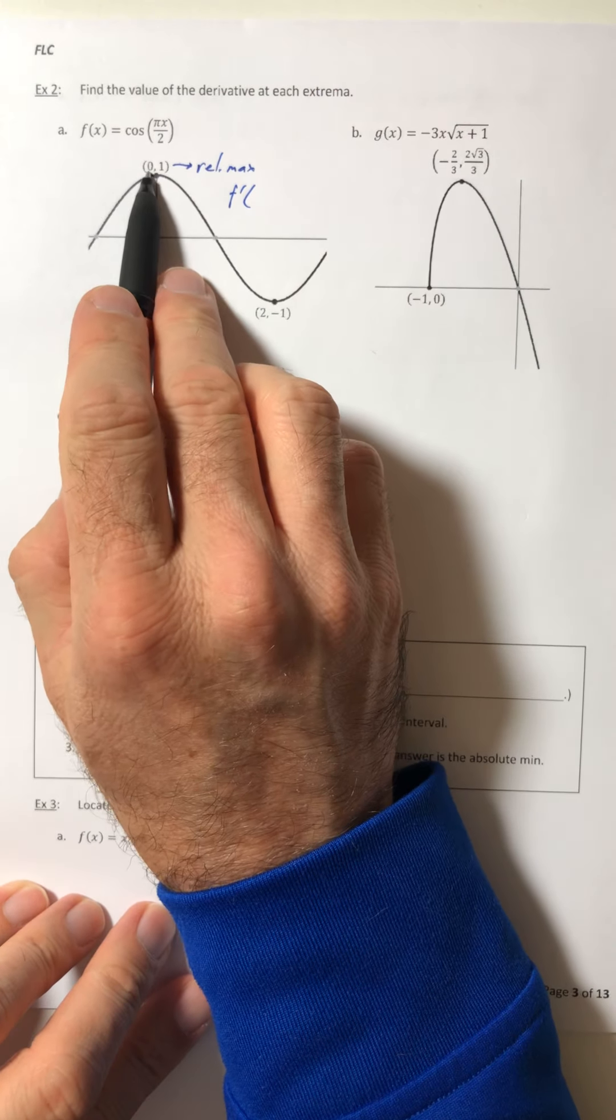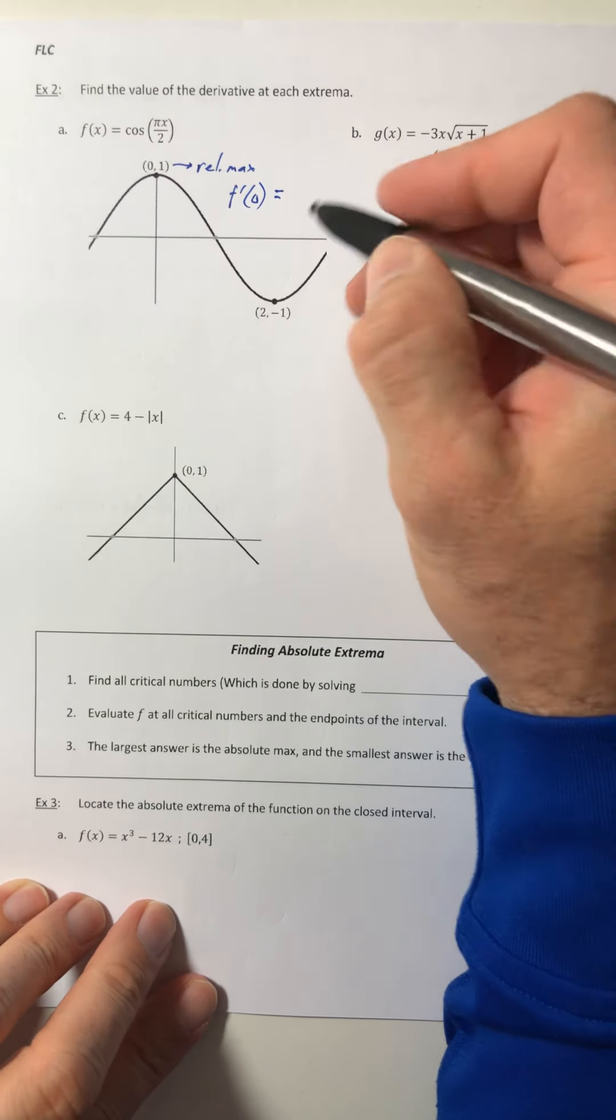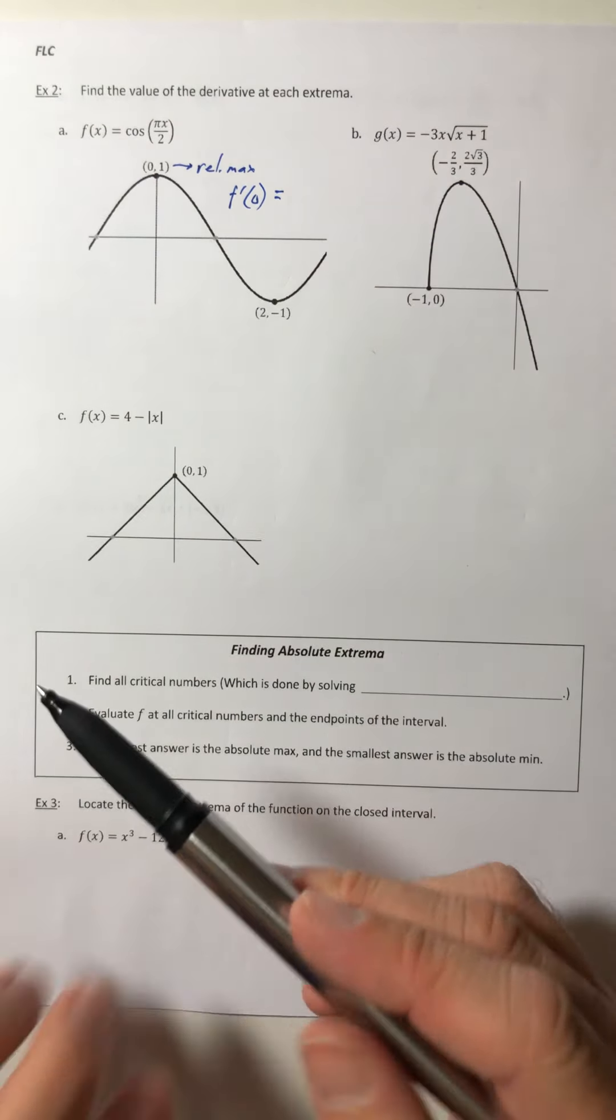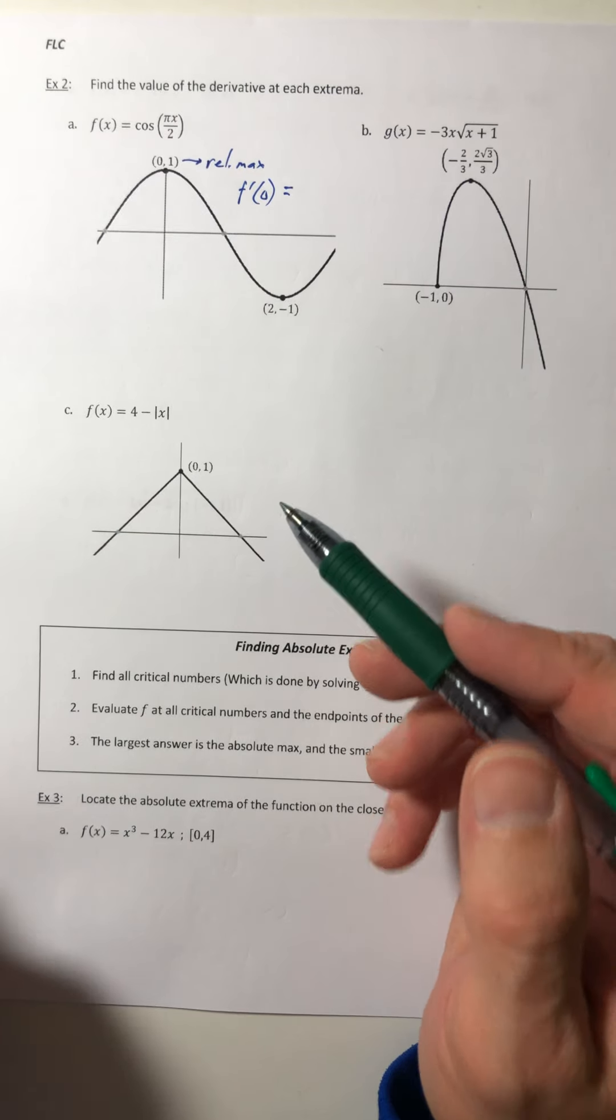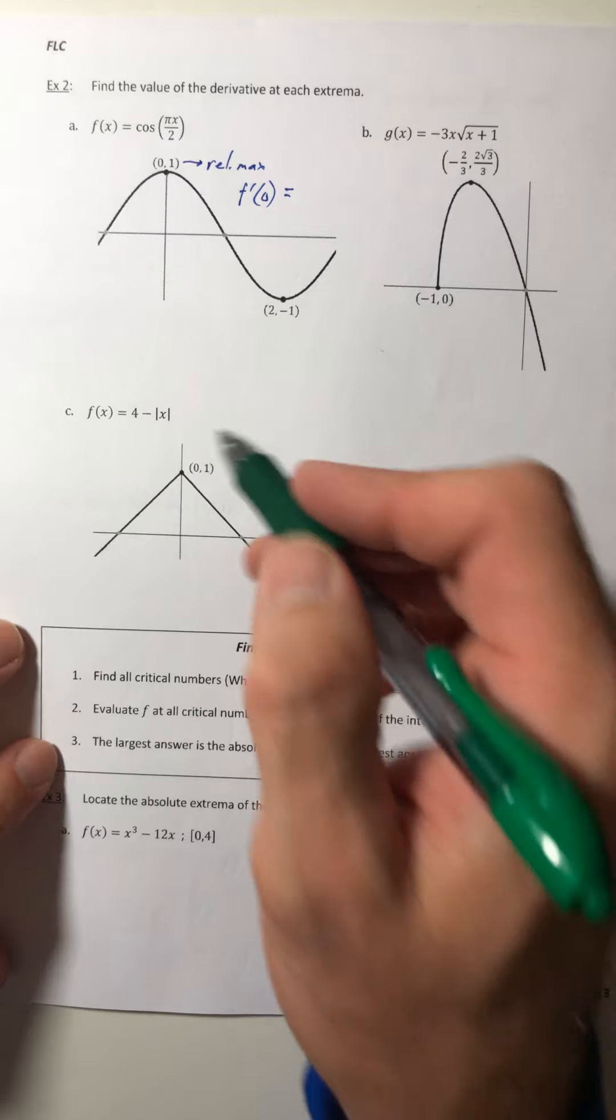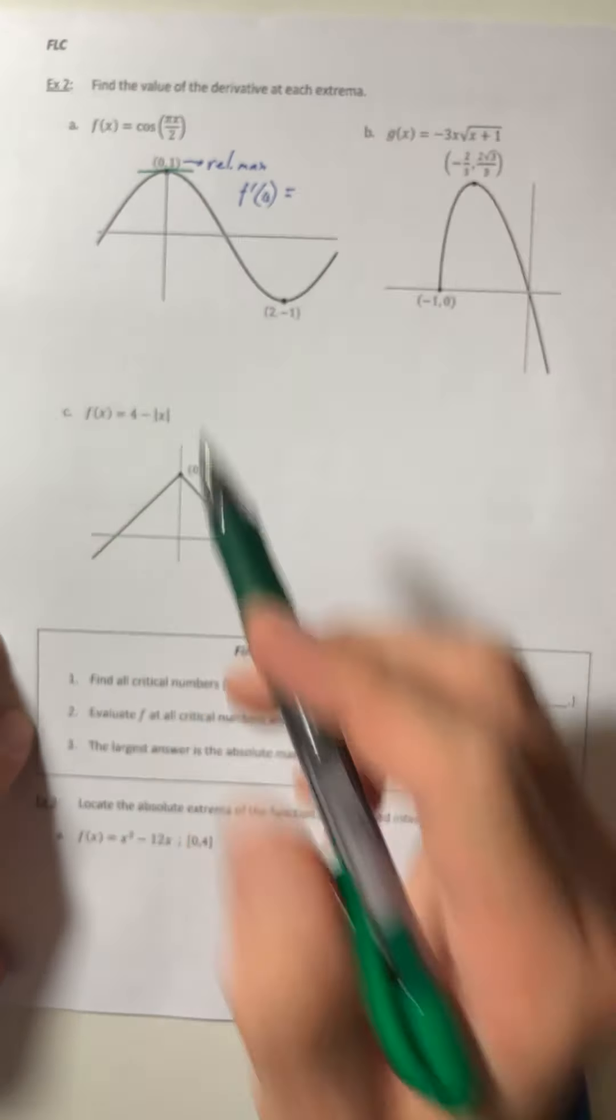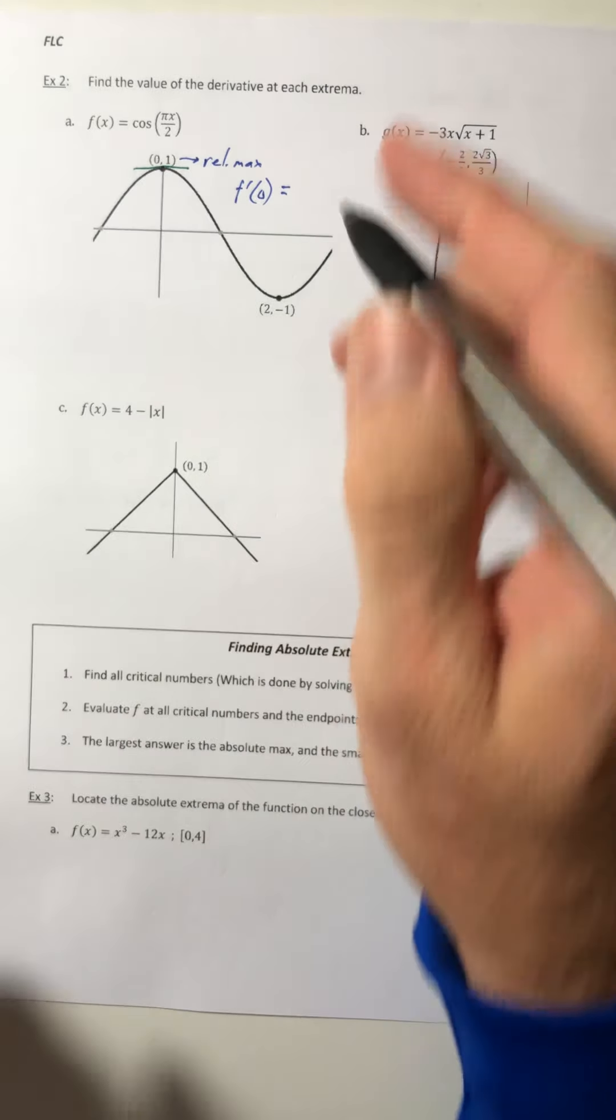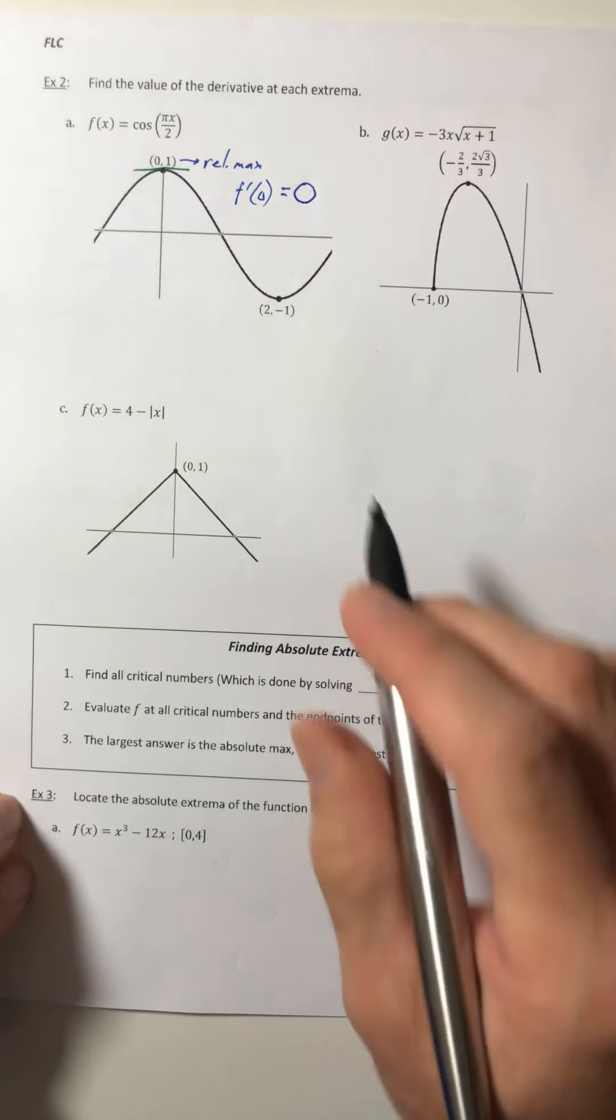So f prime of that same x value, the zero, it's either zero or undefined. So how do you determine which one it is? Well, again, what is a derivative? It's the slope of the tangent line. So if you drew a tangent line, it's probably horizontal. And the slope of any horizontal line is zero.